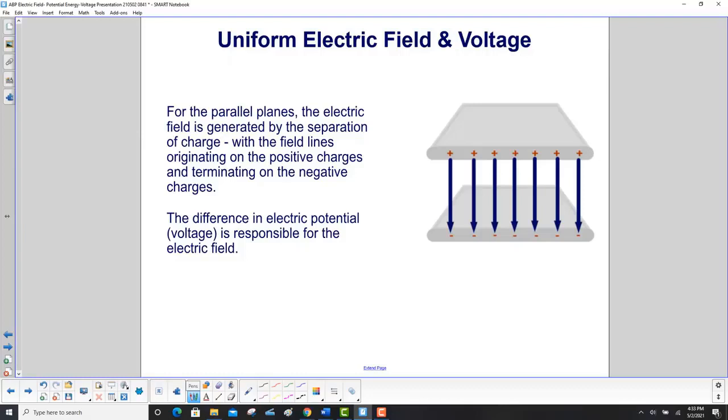For the parallel planes, the electric field is generated by the separation of charge. You've got all positives up here and all negatives down here. The field lines originate on the positive charges and terminate on the negative charges. The difference in electric potential, voltage, is responsible for the electric field.